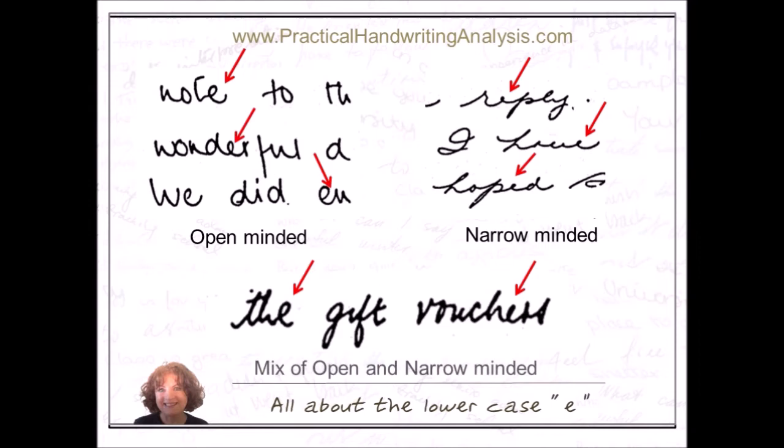This last example has one of each. The e in the word 'the' is open, so open-minded, and the e in the word 'vouchers' is closed, so closed-minded. This person will sometimes be open to new ideas and at other times they'll really find it hard to accept them.